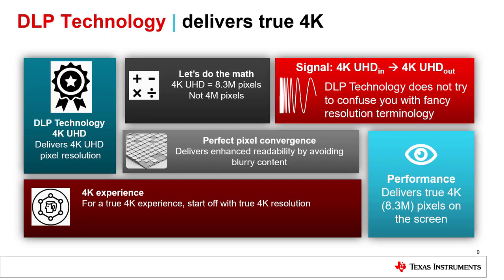We hope this presentation provided clarity that DLP technology delivers true 4K resolution — that is, 8.3 million addressable pixels on the screen. DLP technology takes in a 4K UHD 8.3 million pixel input signal and projects a 4K UHD 8.3 million pixel output signal on the screen. Unlike 3LCD technology, we maintain the resolution from input to output signal. 3LCD technology converts the 4K UHD 8.3 million pixel input signal into only a 4 million pixel output signal.